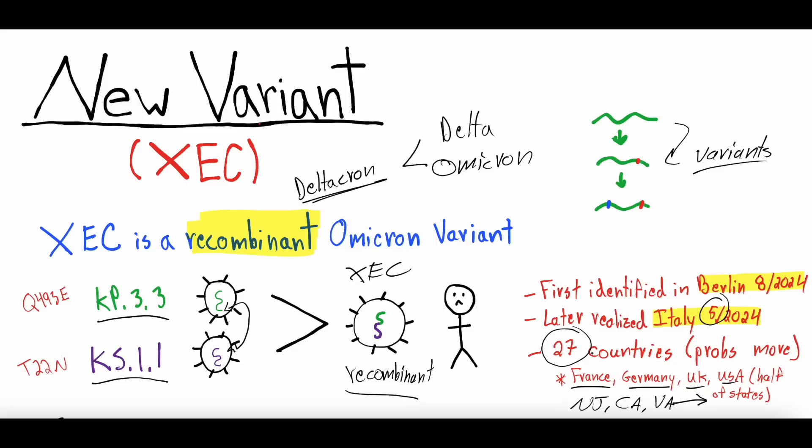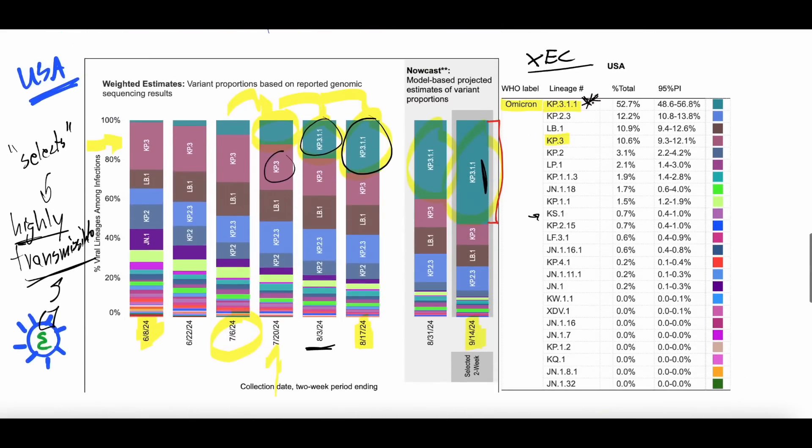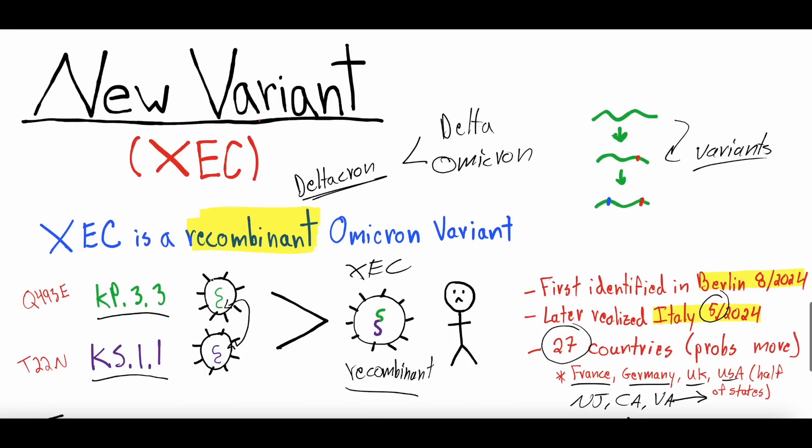So people are thinking it is a more contagious, more transmissible variant. And some are predicting that it's going to overtake this KP.3.1.1, which is the one that's dominating right now. And the reason people are thinking it's more transmissible, just for those interested, is that it kind of got a different mutation from the KP.3.3 variant and the KS.1.1 variant. And both those mutations are mutations that help spread the virus on the spike protein. One is called the Q493E, which is representative of an amino acid in the spike protein. The other is T22N, representative of a mutation within an amino acid in the spike protein. And each one of these mutations, this mutation helped KP.3.3 be more transmissible, and this mutation helped KS.1.1 be more transmissible. So this new recombinant has both the Q493E as well as the T22N mutation in its spike proteins, which people are hypothesizing that's going to lead it to be more transmissible and infectious.